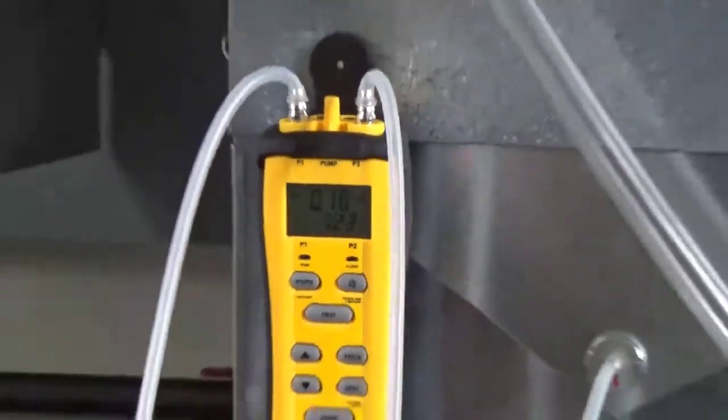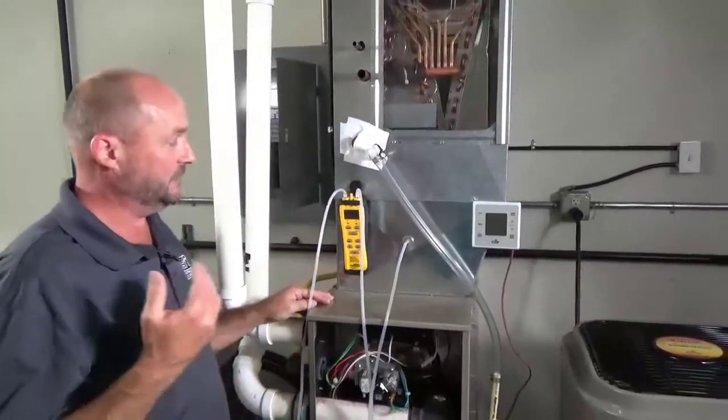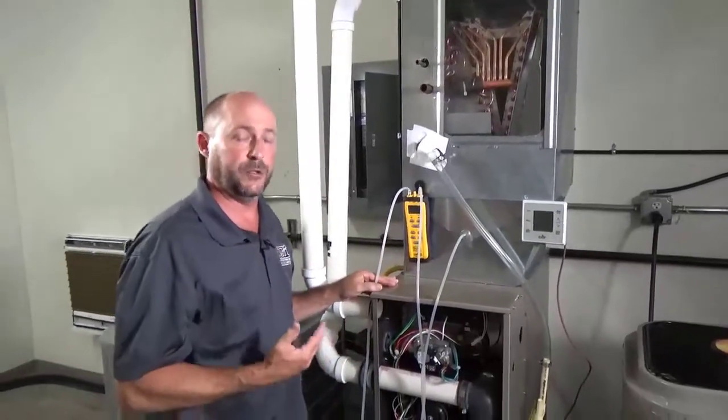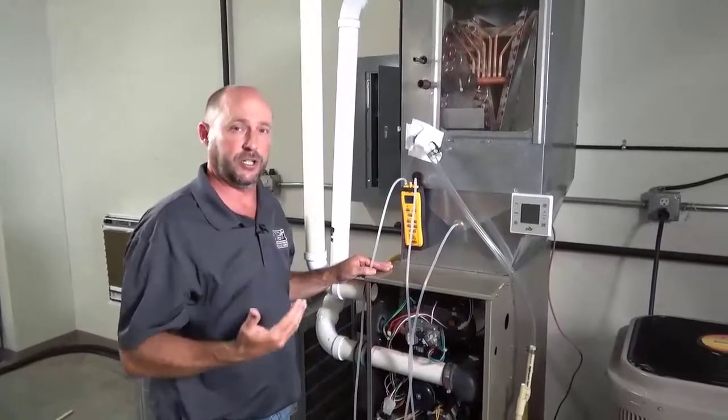So that's the way once you get your total external static pressure you can go to your blower chart and check out your CFM and make sure you're setting up your CFM to the proper amount going for whatever ton of air conditioning you have.